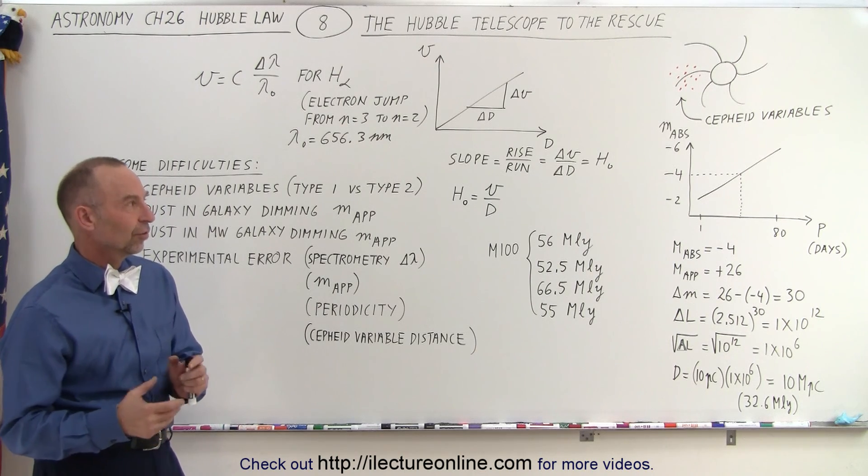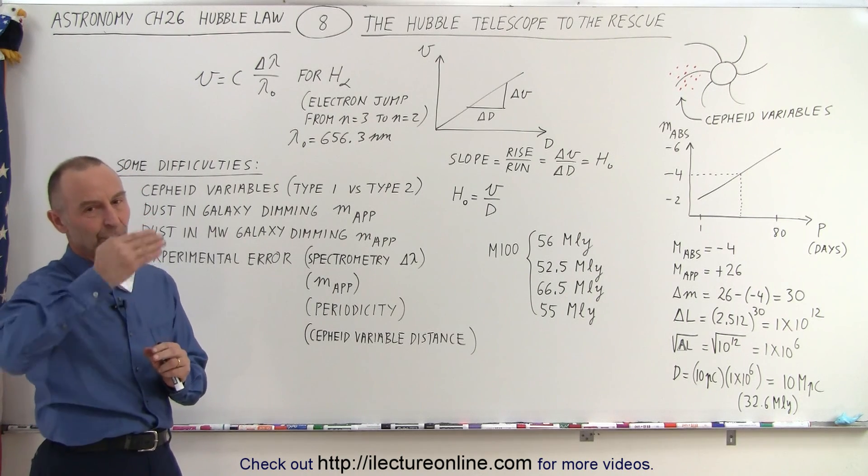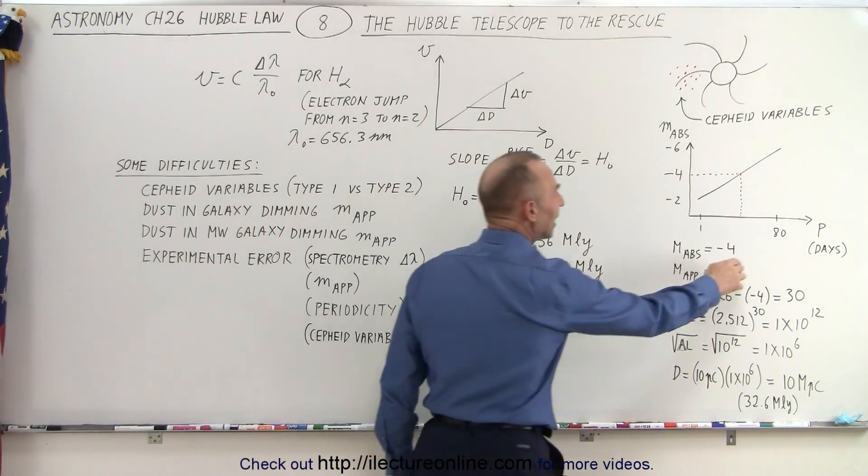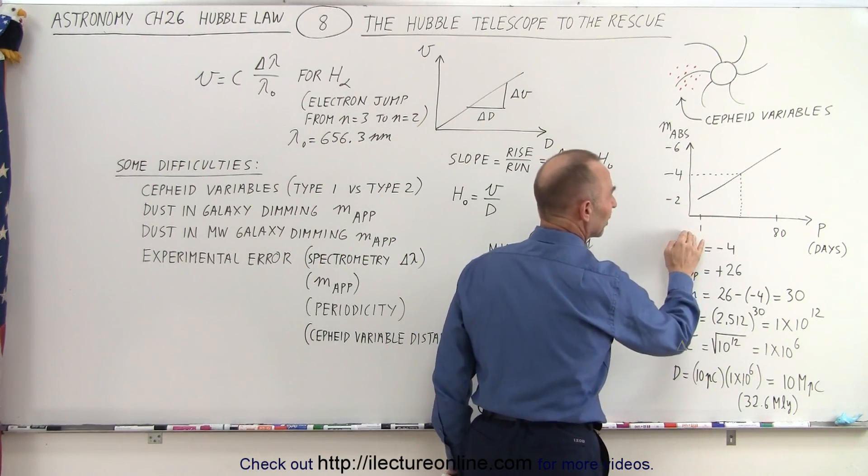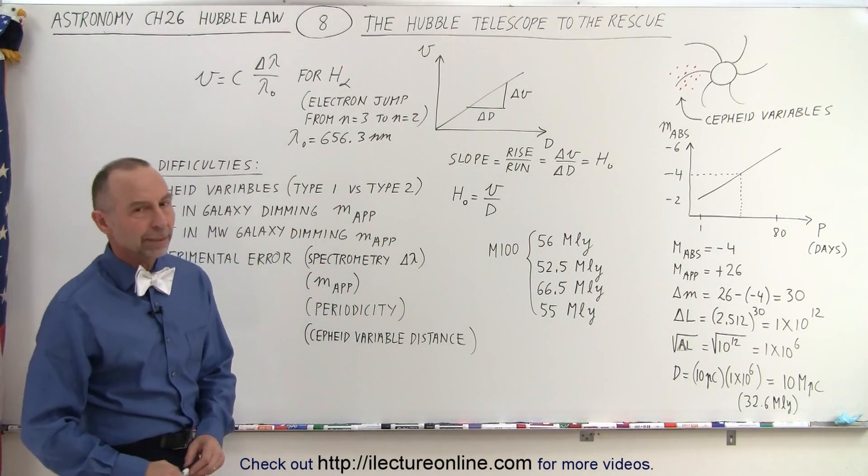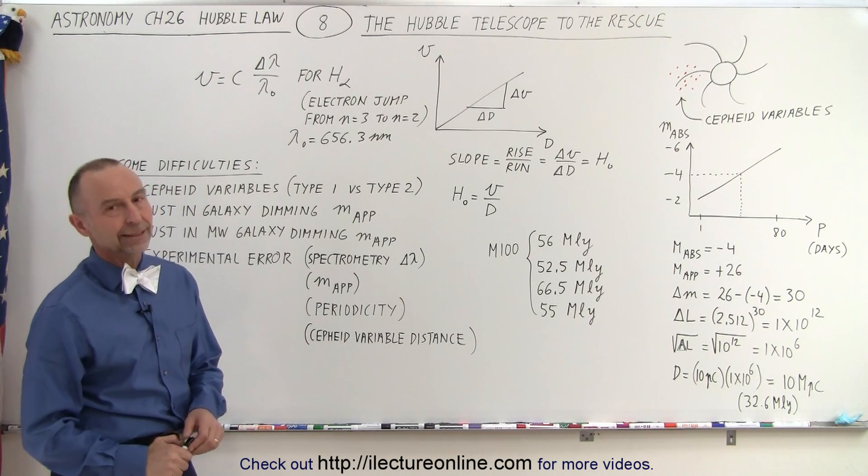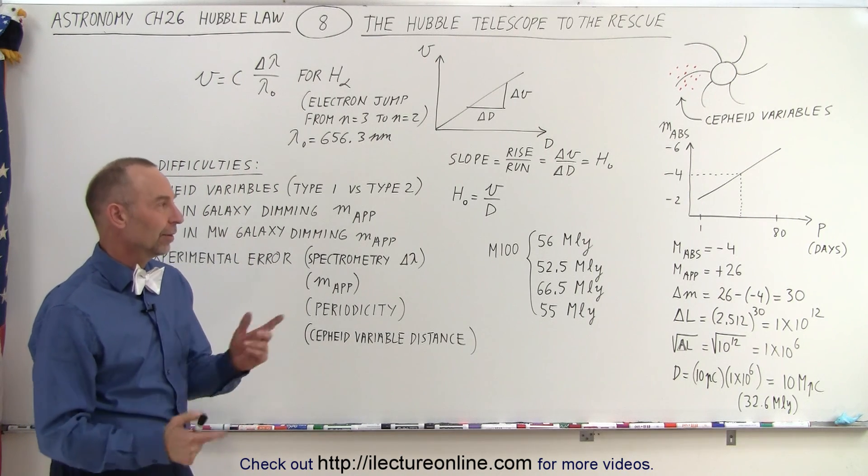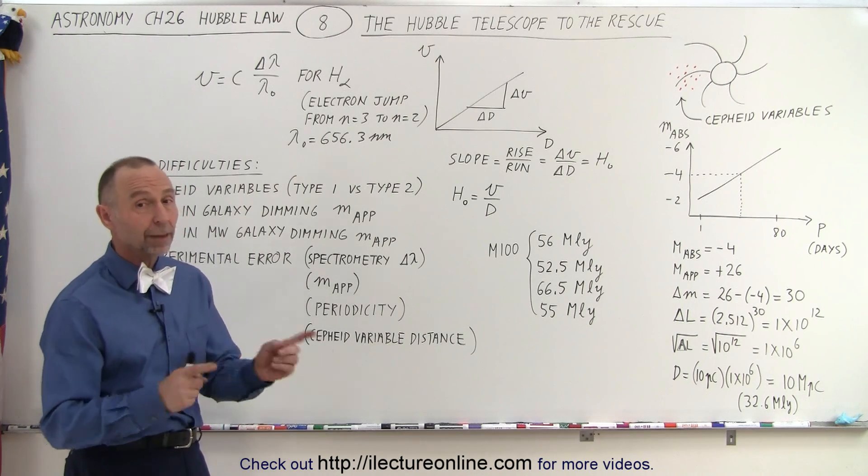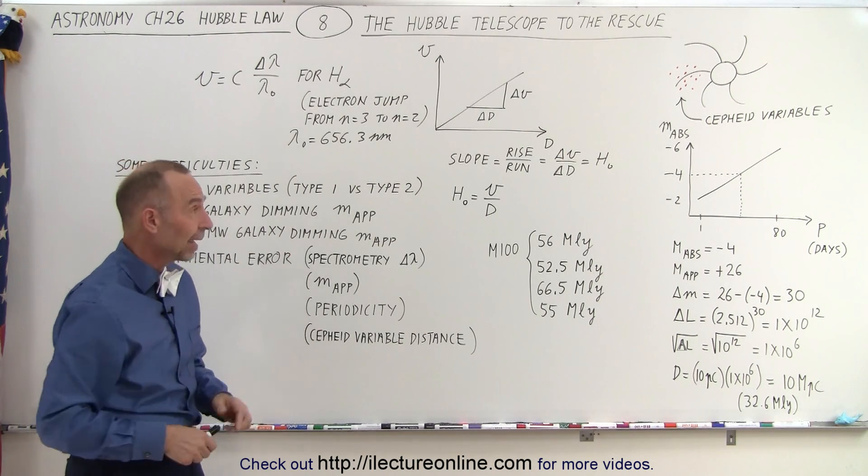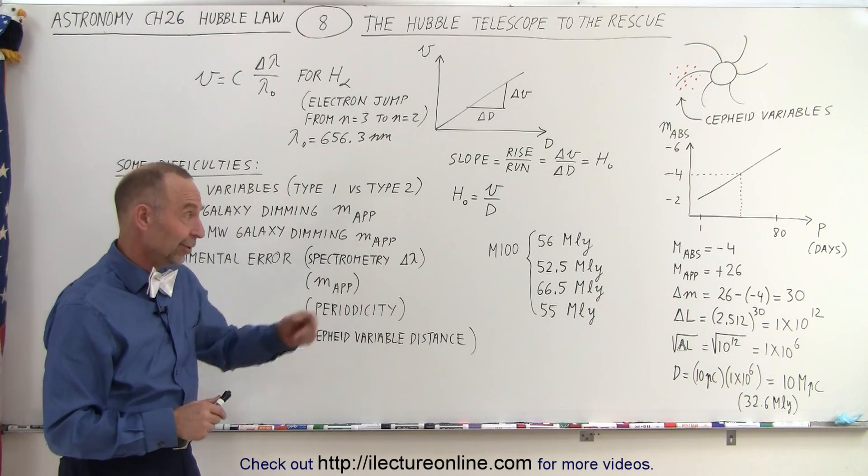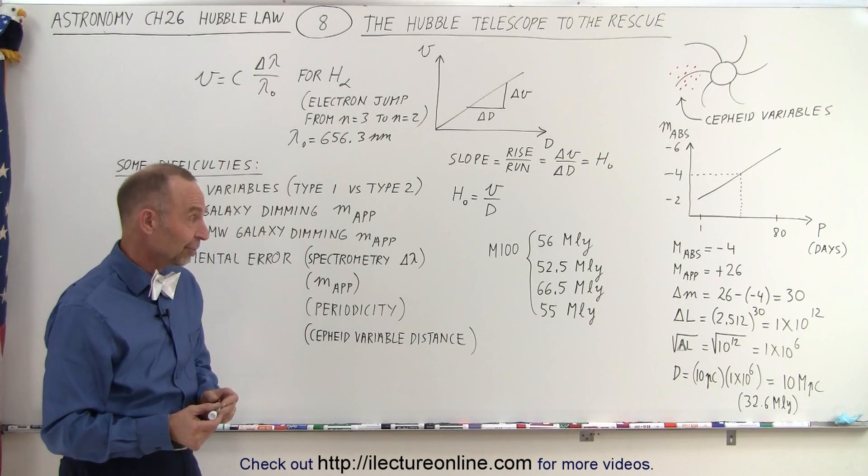Not likely, because Cepheid variables are so unique with the change of the brightness. It's always between one and 80 days. If it's less than one it's an RR Lyrae variable; if it's more than 80 or more than 100 it's a Mira variable, and you would not make that kind of mistake. But the other things—the difference between population one and population two stars, meaning Type 1 and Type 2 Cepheid variables, plus all the other things that could go wrong when you make the measurements—notice you can have some quite different results.